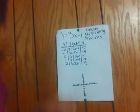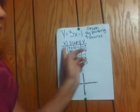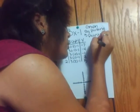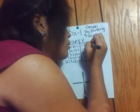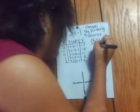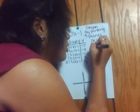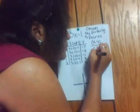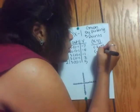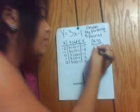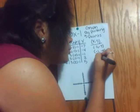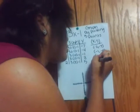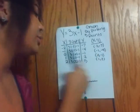So now you have all your x values and y values. Make another table with just x and y. So it would be negative 2 and negative 7, negative 1 and negative 4, 0 and negative 1, 1 and 2, and 2 and 5.